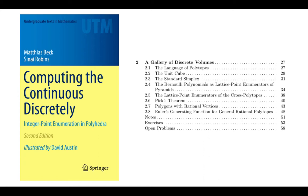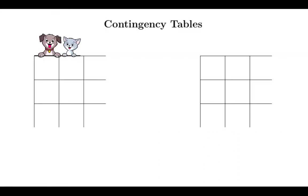I will introduce an application to the mathematics we've discussed so far. This application is about contingency tables. What you see here is the easiest instance — these are two by two tables — but I hope the general picture will be clear from this example.